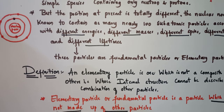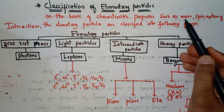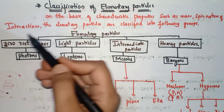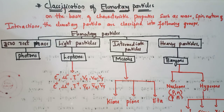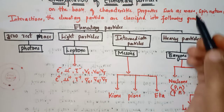Now let's see the classification of elementary particles on the basis of characteristic properties such as mass, spin, and nature of interactions. On the basis of mass the classification is different, on the basis of spin it is different, and on the basis of nature of interaction also the classification is different. I have combined all these things into a flowchart to make it easier to understand.